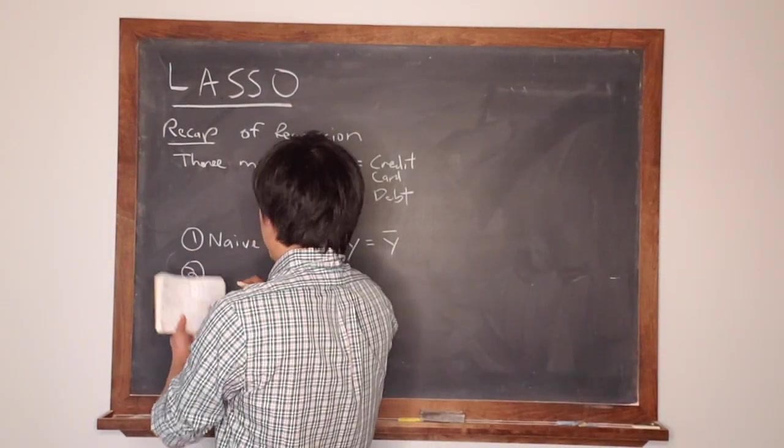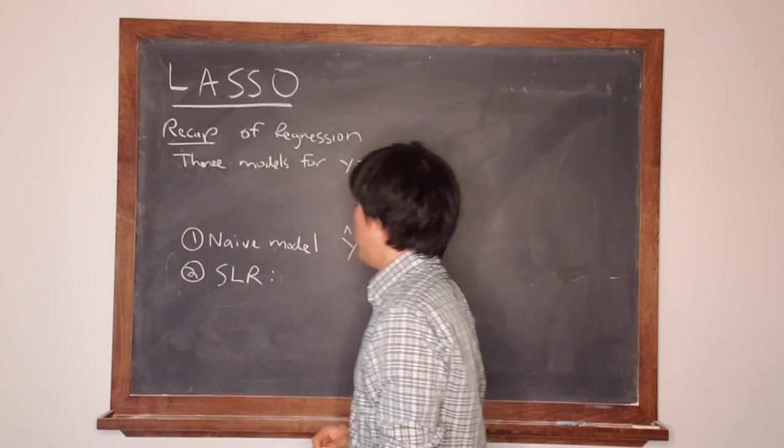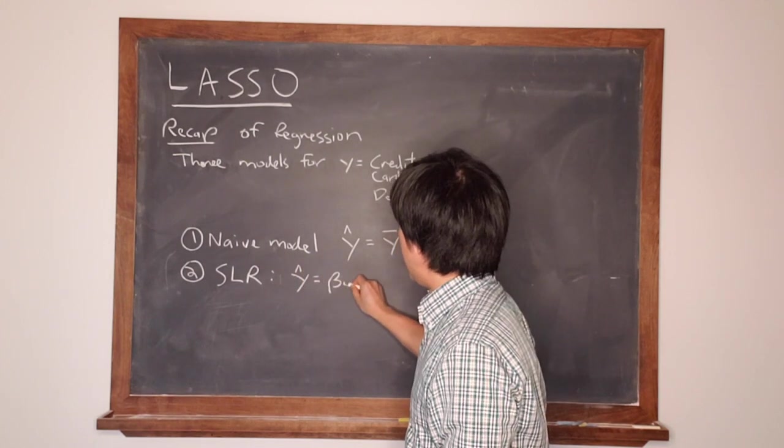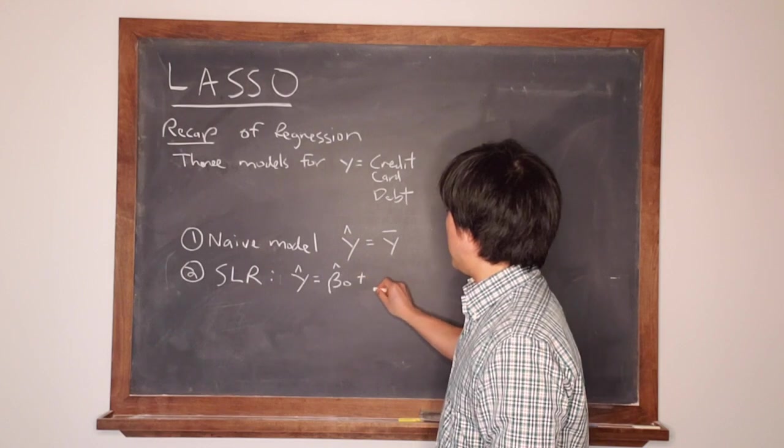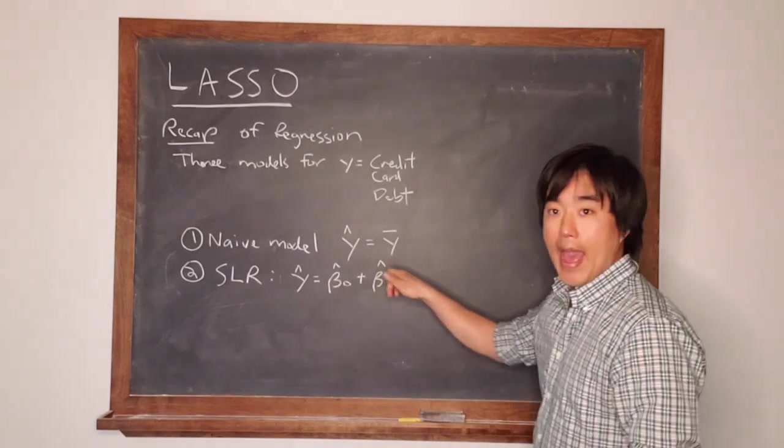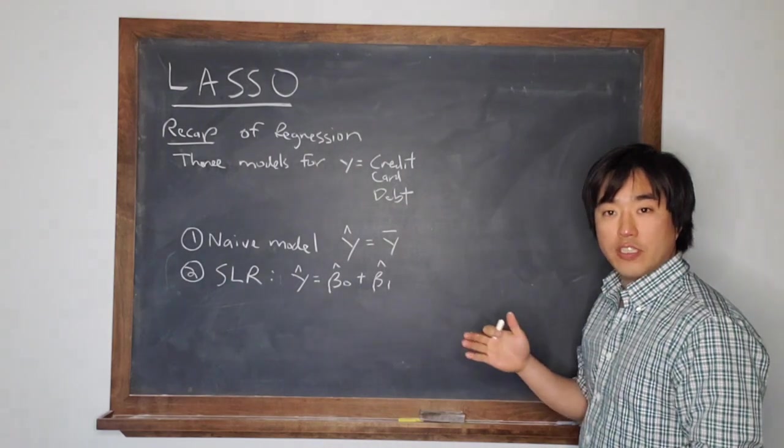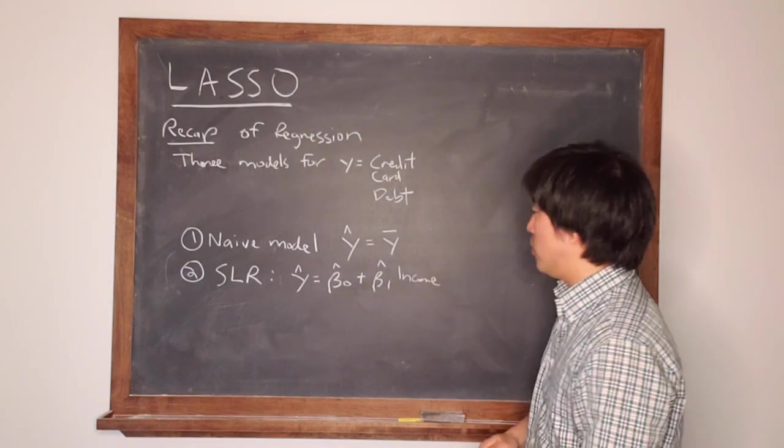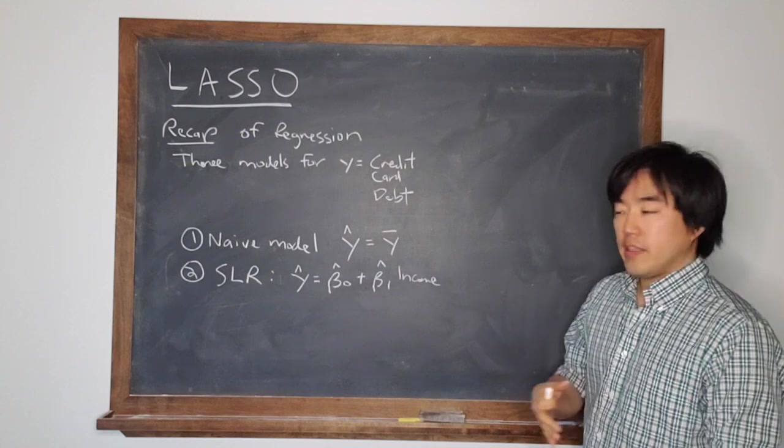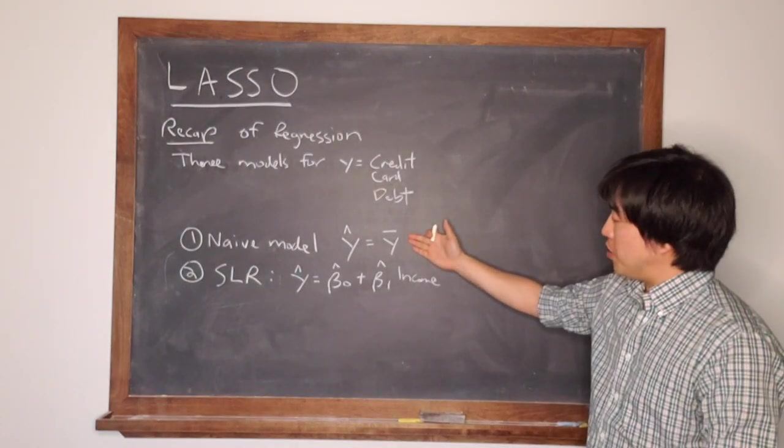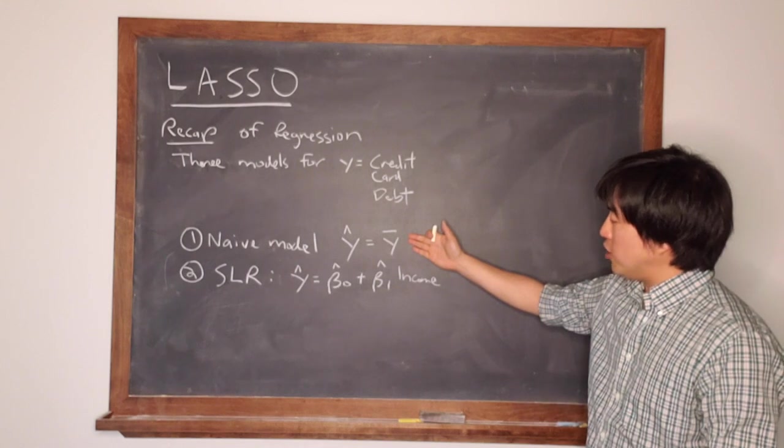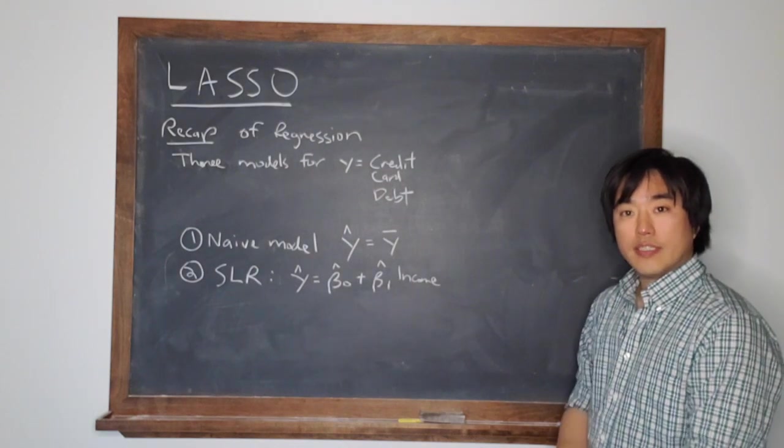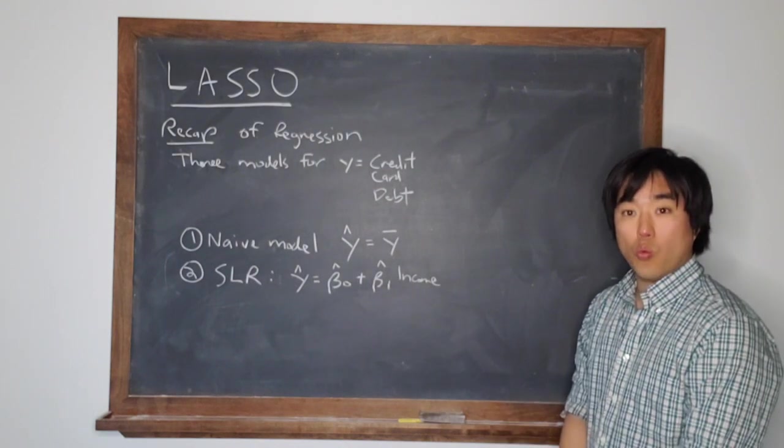The next model is a simple linear regression model, where Y-hat is equal to an intercept plus beta-1-hat—note we're putting hats on top of the values of the intercept and the slope because they're fitted—times income of the individual. So now we're saying, can we do better than just using the average of everybody in the population? Can we incorporate information about their income in order to get better predictions? This is a simple linear regression model because there's only one predictor variable.